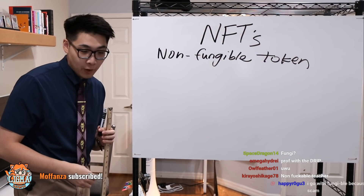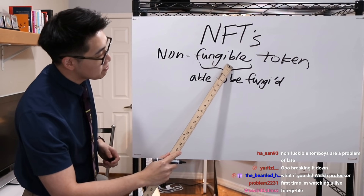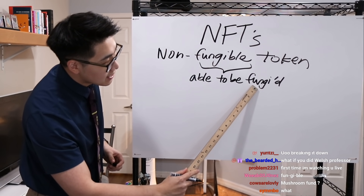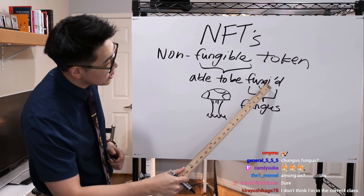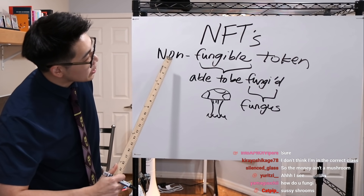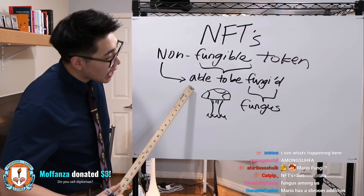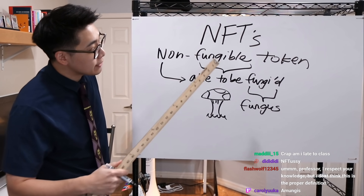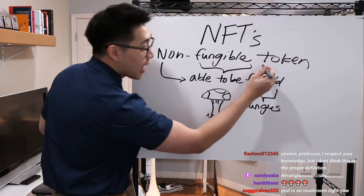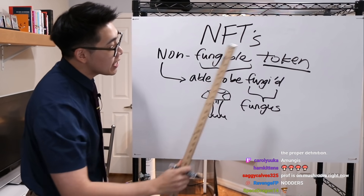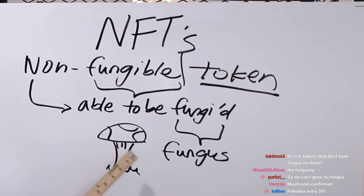What does that mean exactly? Well, we look at the word fungible. Put simply, able to be fungied. So non-fungible means not able to be fungied. Fungi referring to fungus. If fungible means able to be fungied and fungied refers to fungus, then non-fungible is referring to not being able to be fungied — as in not being able to be fungused. So a non-fungible token is a token that can't have fungus grown on it.